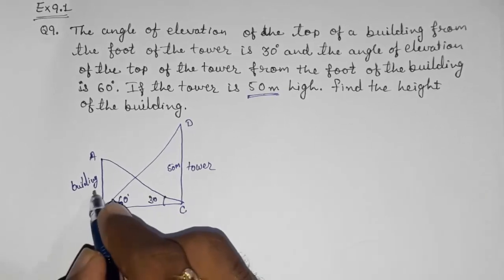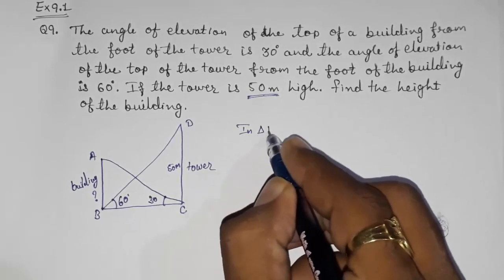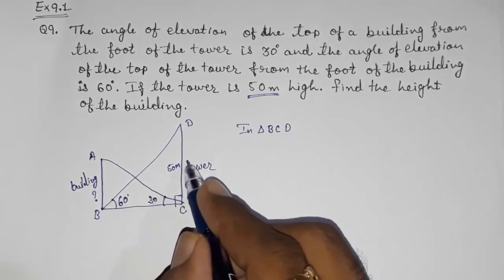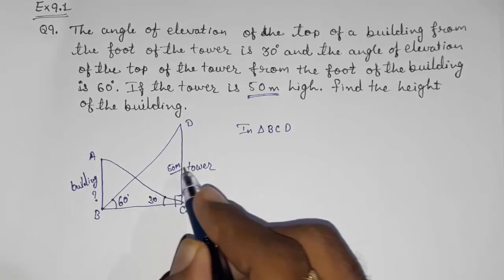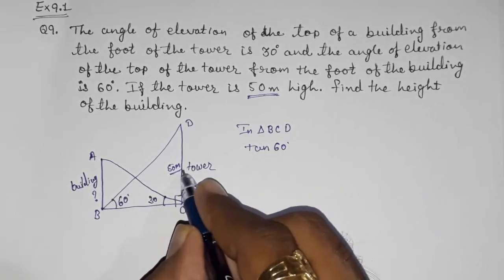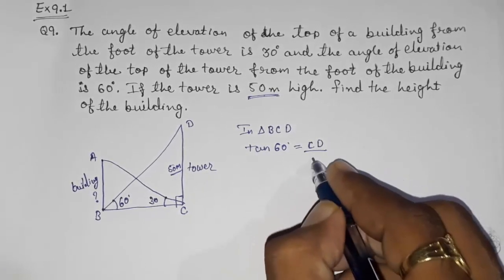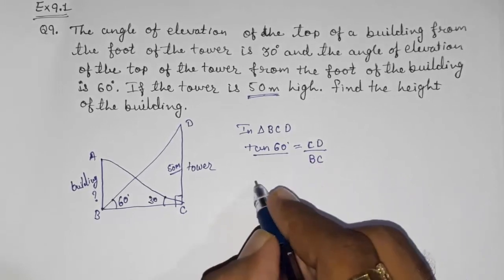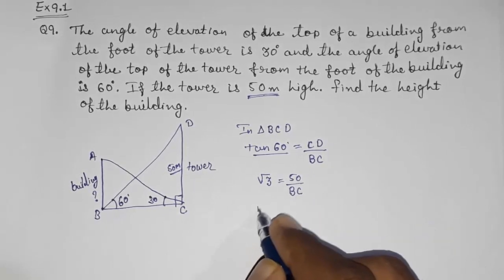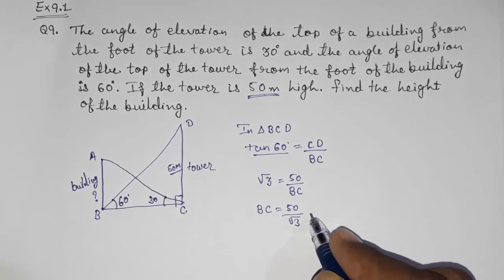This will be our proper figure. Give names A, B, C, D to the points. They told us the height of the tower is 50 meters, and we want to find out the height of the building. First we use triangle BCD — it is a right angle triangle with angle 60 degrees. Using tan 60 degrees: opposite is CD and adjacent is BC. The value of tan 60 is root 3, so root 3 = 50 / BC, giving BC = 50 / root 3.